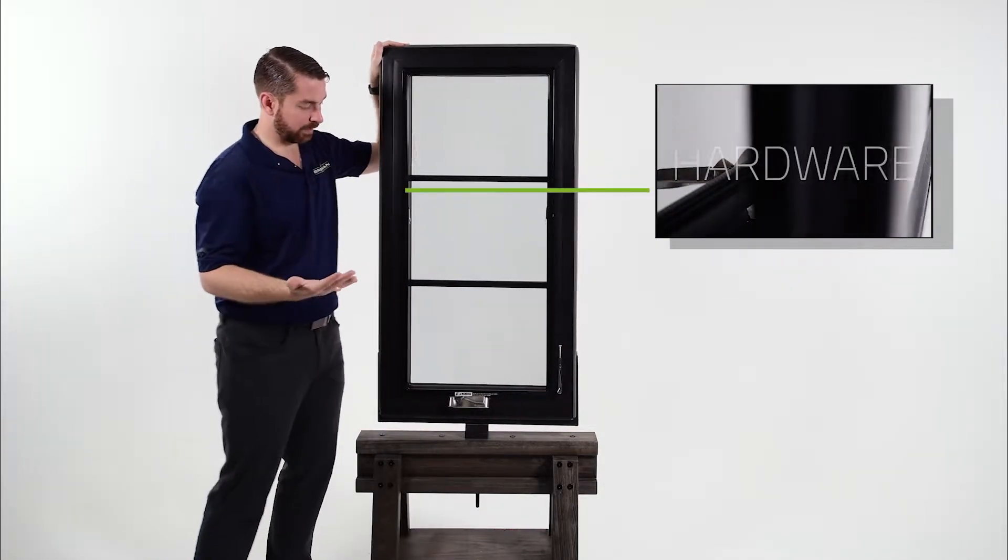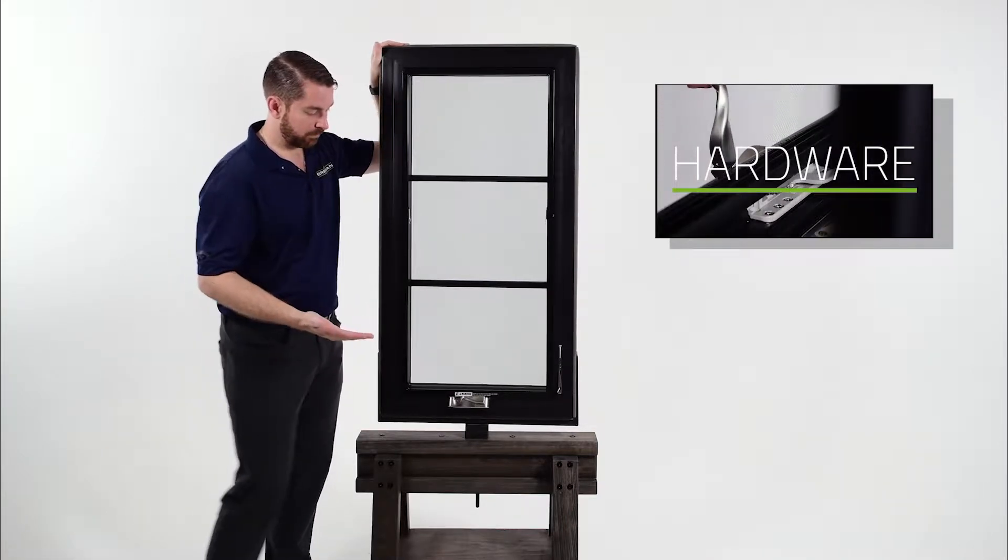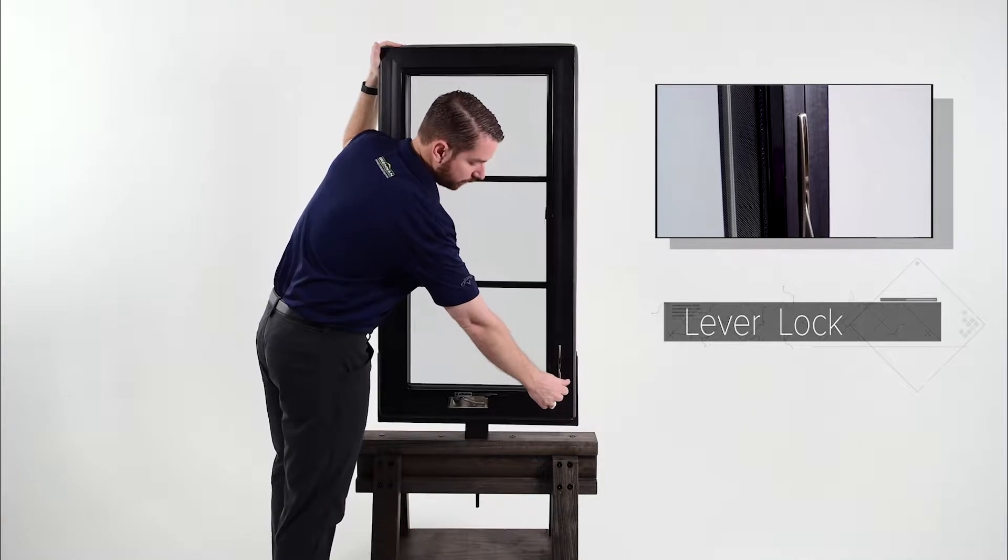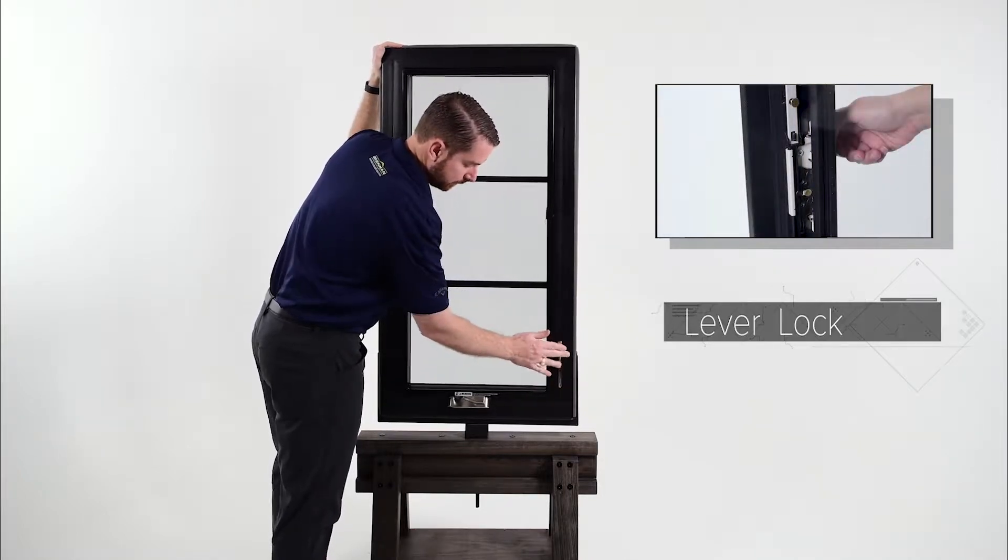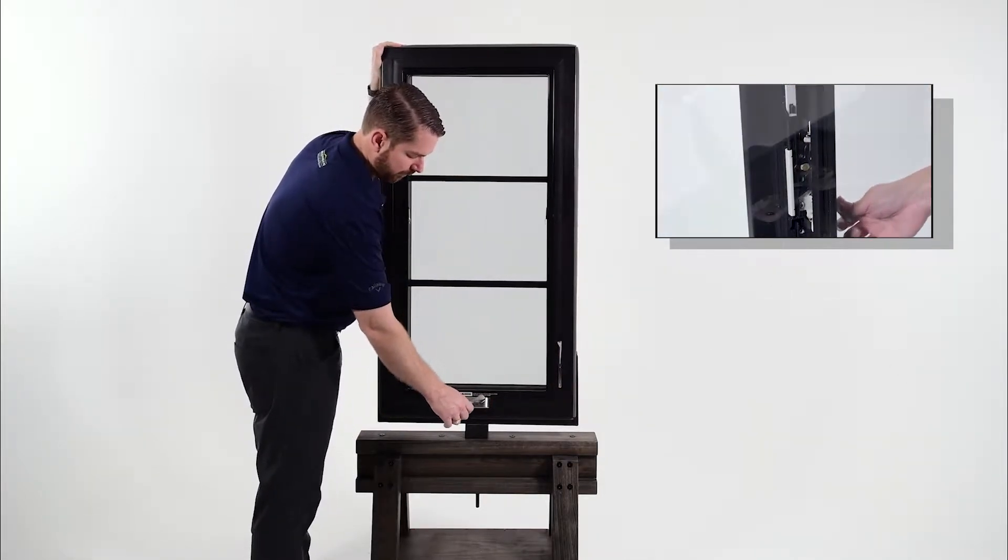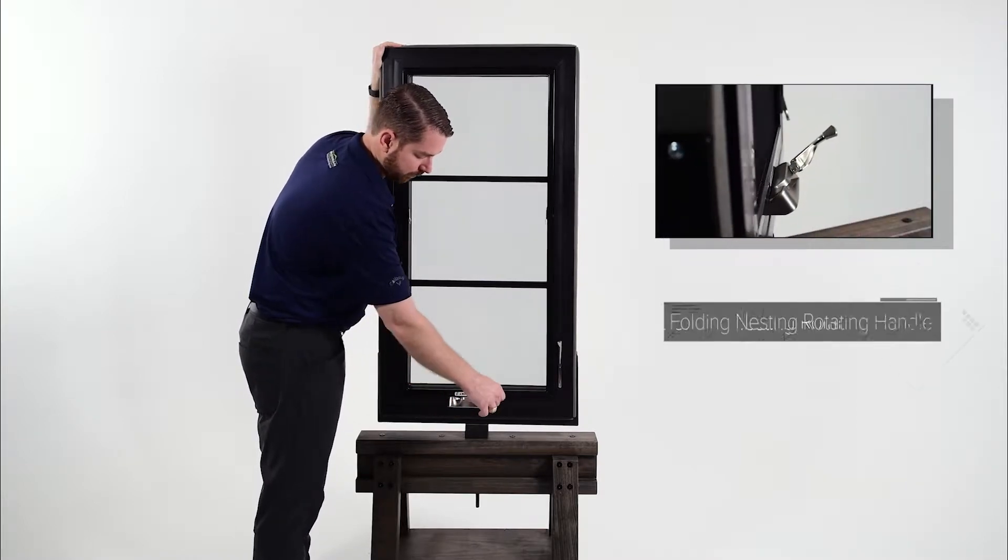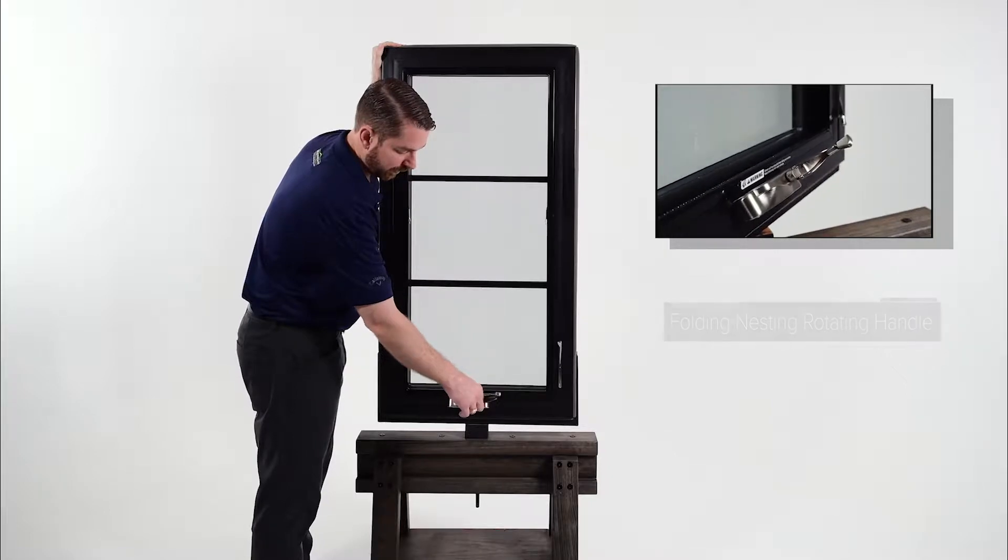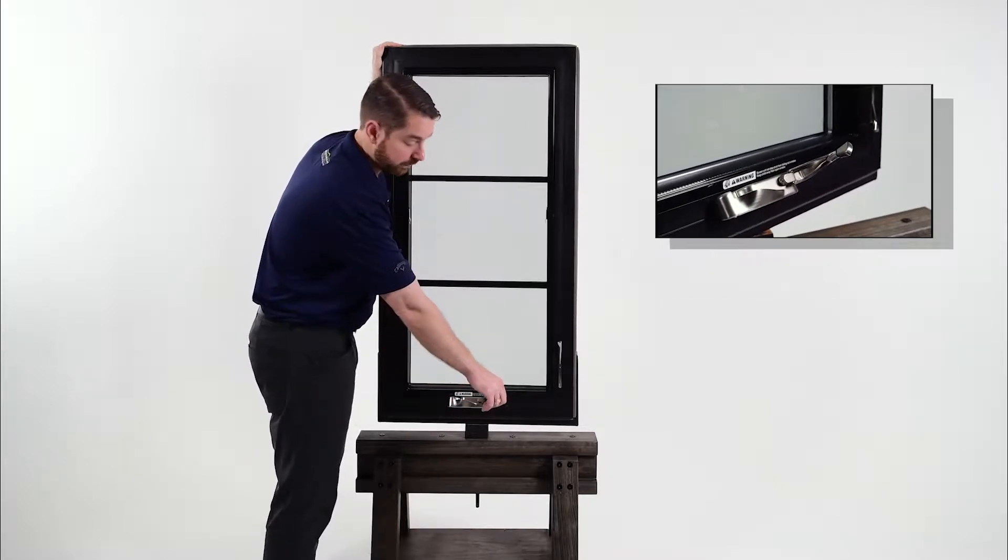So we'll go ahead and start with the hardware. In order to unlock the casement window, you have a lever lock on the side of the window. And then to operate the window, you have a folding nesting rotator handle with a nifty little spinner handle here on the end to allow for ease of operation.